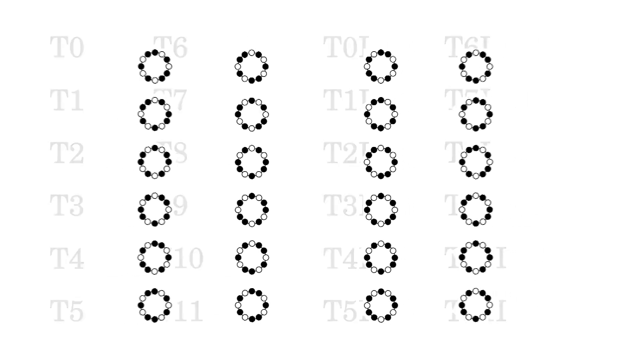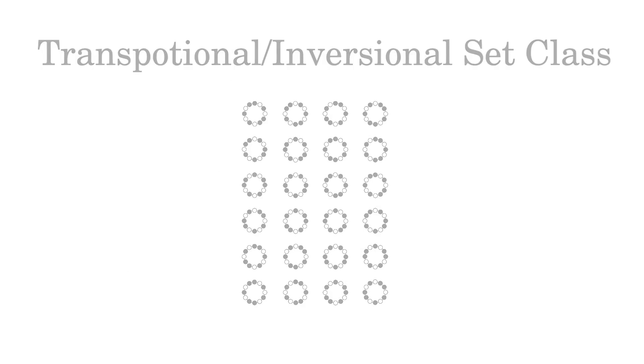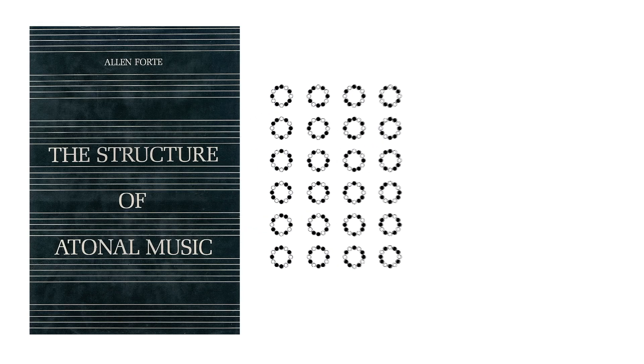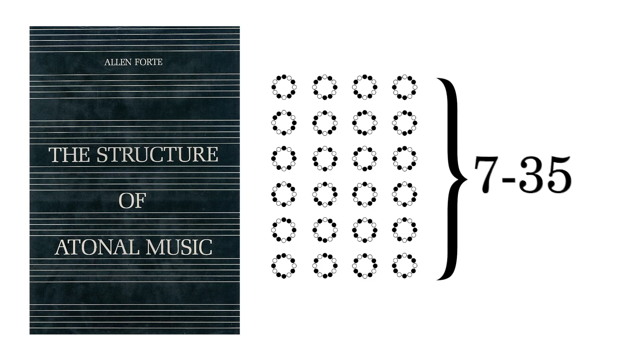This set of twenty-four pitch class sets is called a transpositional inversional set class. All the sets belonging to the same class are fairly similar sounding. In his 1973 book The Structure of Atonal Music, Alan Forte identified all the possible set classes and gave them all a code. A Forte class number refers to a pattern of tones in all its transformations.